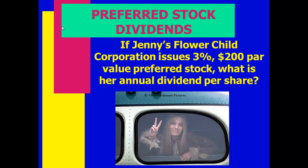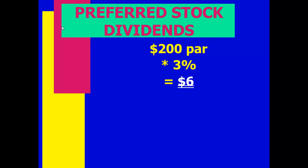For example, if we issue 3%, $200 par value preferred stock, the annual dividend per share is $200 par times 3%, which equals $6 per share. That $6 might be paid all at once or as $1.50 per quarter. We took the percent times the par value to get the annual dividend.